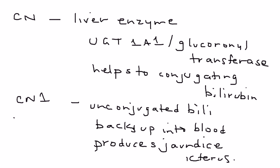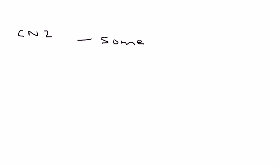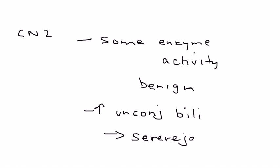In Krigler-Najjar 1, the UGT1A1 enzyme is essentially without activity, which results in the condition being fatal, usually in the neonatal period. In Krigler-Najjar 2, there is some activity of the enzyme. Because of that, it is not fatal — it's actually pretty benign — but you will have very high levels of unconjugated bilirubin, resulting in severe jaundice as the primary symptomatology.